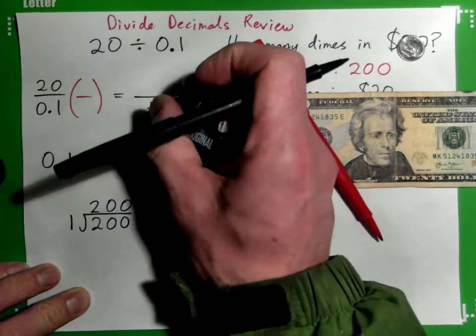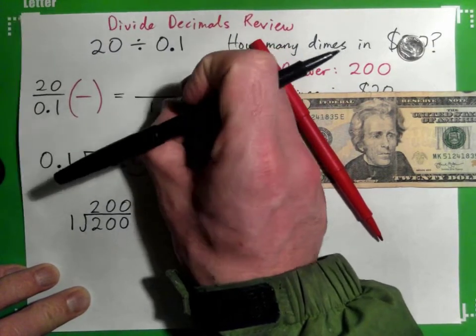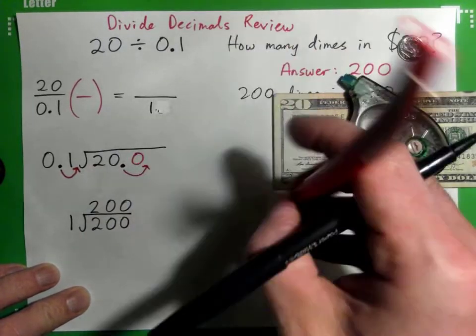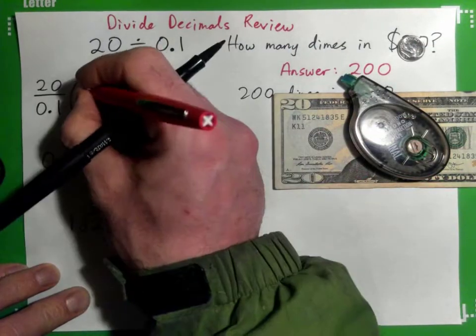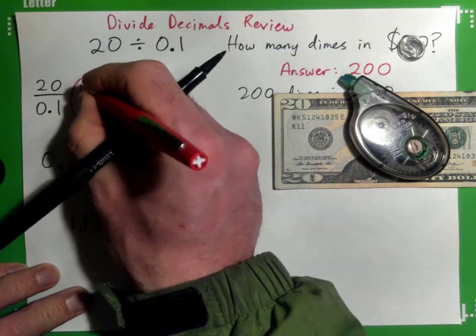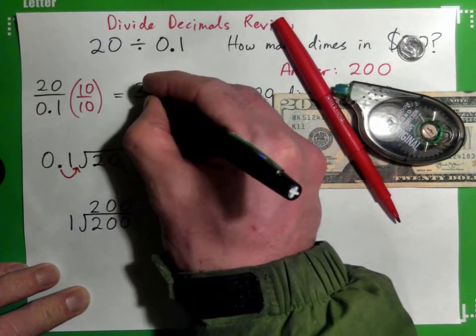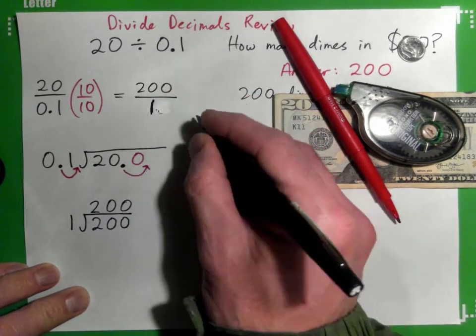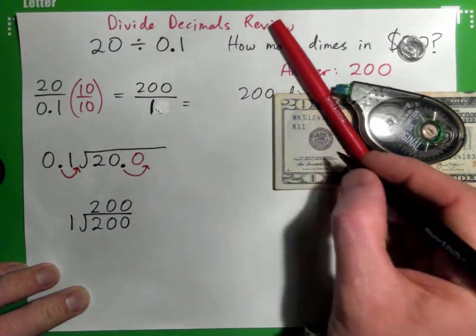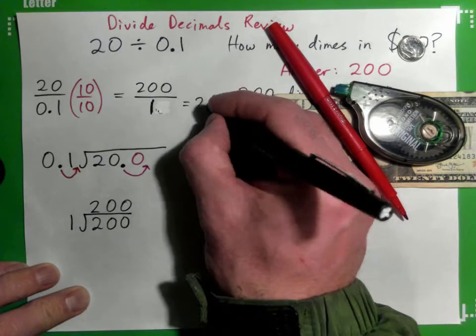And we must multiply the top by 10 also. So 20 times 10 is 200. And then we have 200 over 1, which is just 200.